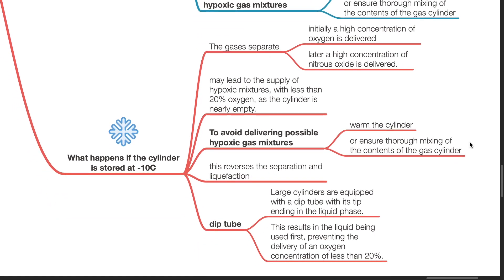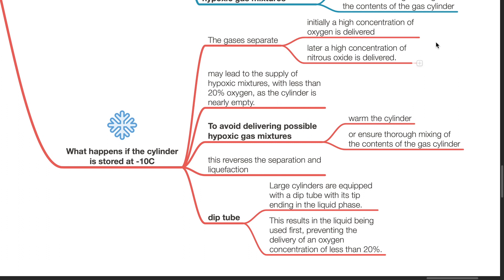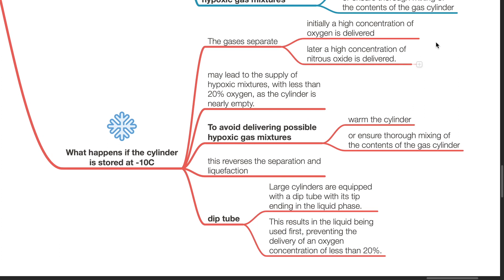What happens if the cylinder is stored at negative 10 degrees Celsius? The gases will separate. Initially, a high concentration of oxygen is delivered, followed by a high concentration of nitrous oxide.